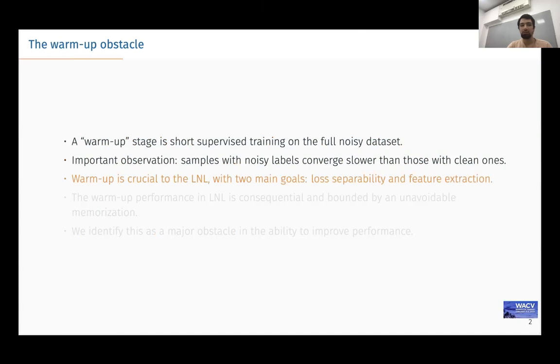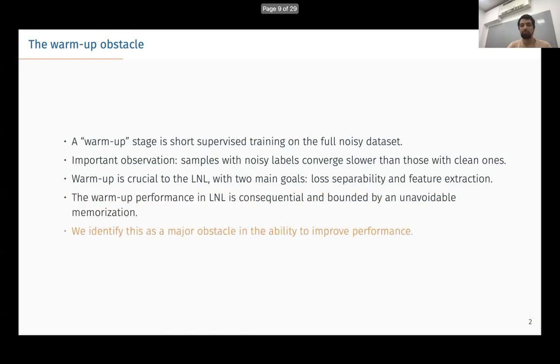We identified two goals of warm-up: loss separability, meaning converges to low loss on clean samples without overfitting on noisy ones, and feature extraction, meaning that the network is able to extract useful features from data. However, there is not much we can do to improve warm-up in regular settings. Its performance is consequential and bounded by unavoidable memorization. We believe this is a major obstacle to improve learning with noisy labels.